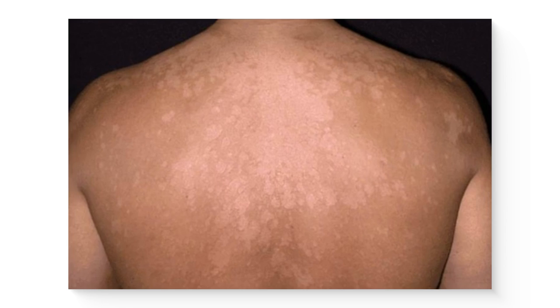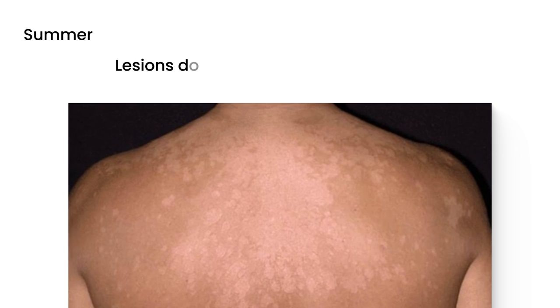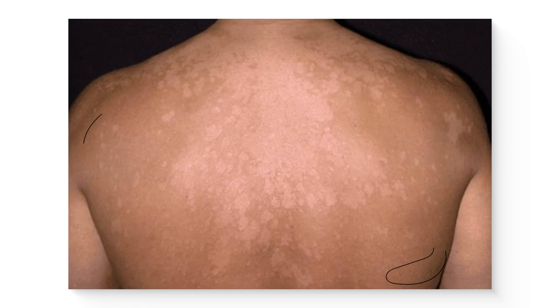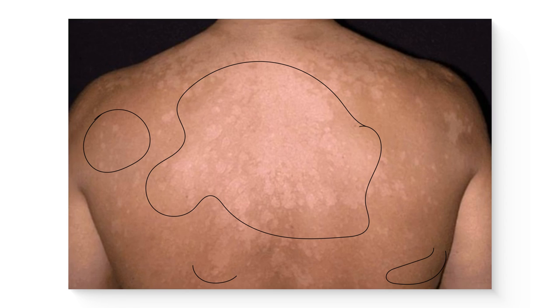Here's a picture of tinea versicolor on a person's back. These lesions are lighter than the person's skin, and that is very characteristic because what happens is, in the summer months when a person tans, the lesions do not tan. That basically makes these lesions obvious on a physical exam. The tan skin — I'm assuming this person is tanned a little bit in this area — but if you notice in the middle, all these lesions are lighter. They're hypopigmented, and there are multiple lesions all over his back.